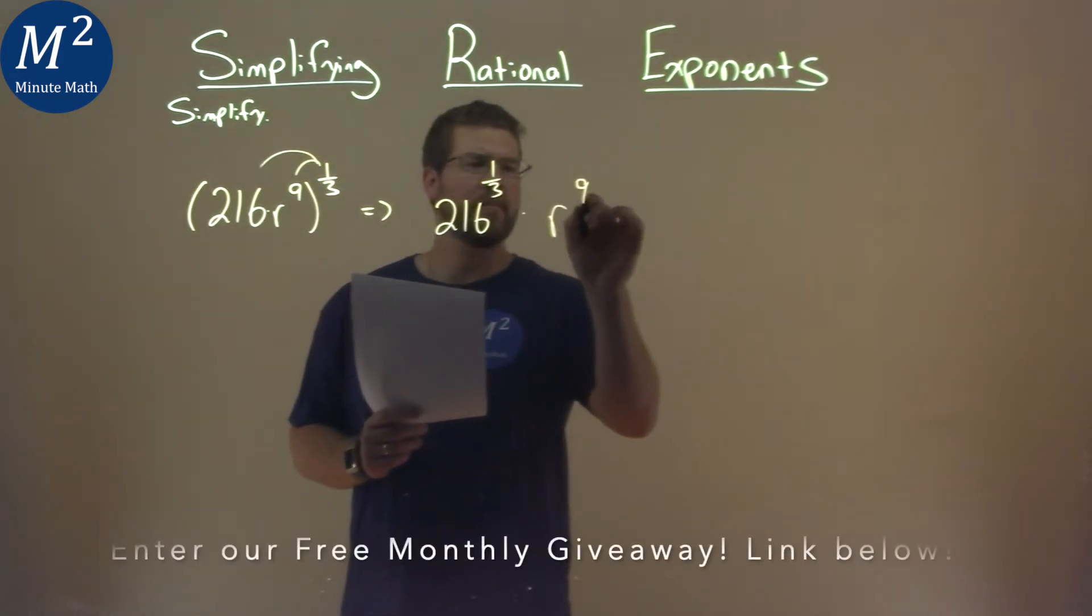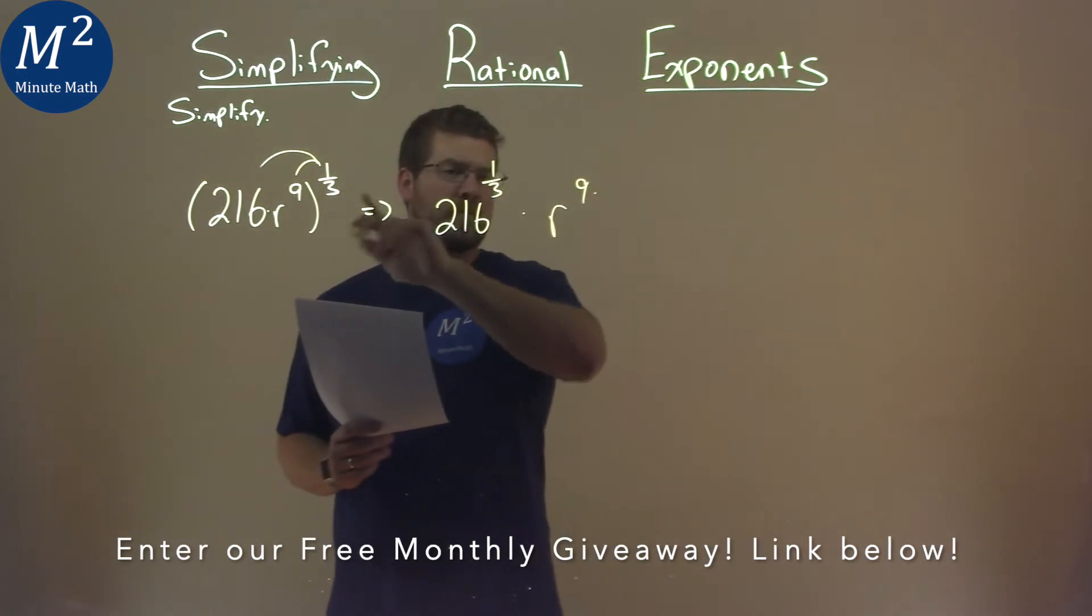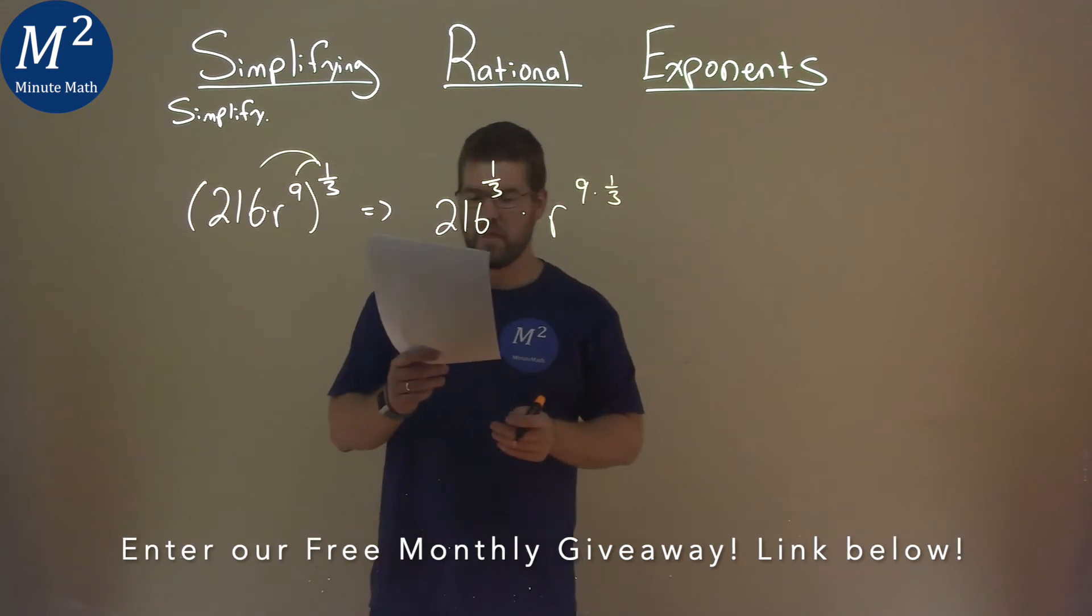Well, we have r to the ninth power, and our rules with exponents is, well, if we're raising something to another exponent, we multiply them. So we have nine times one-third there.